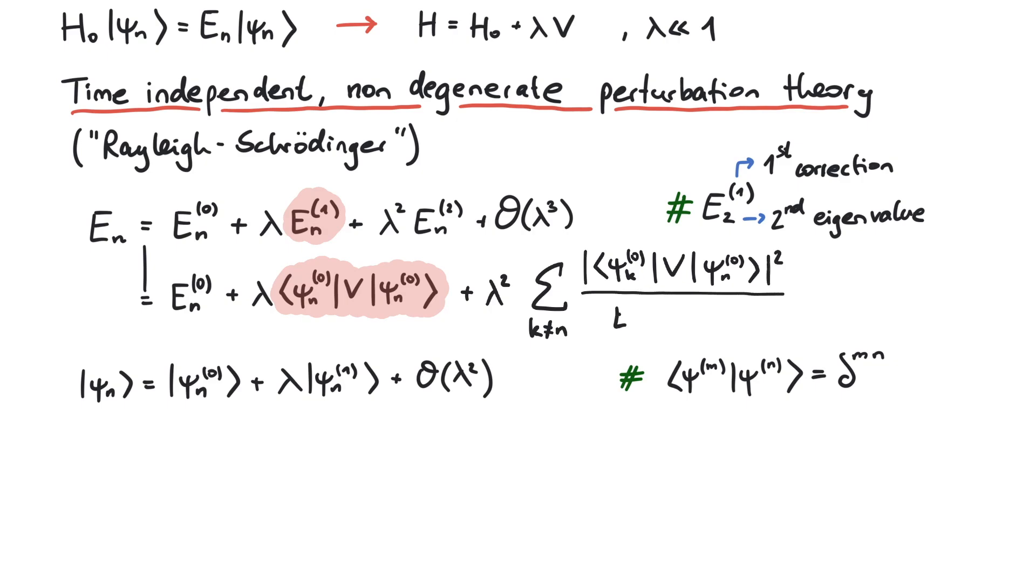Then we divide it by the difference between the unperturbed nth and kth energy. And we do this for all eigenfunctions, except for the nth one, because then we would have to divide by zero.